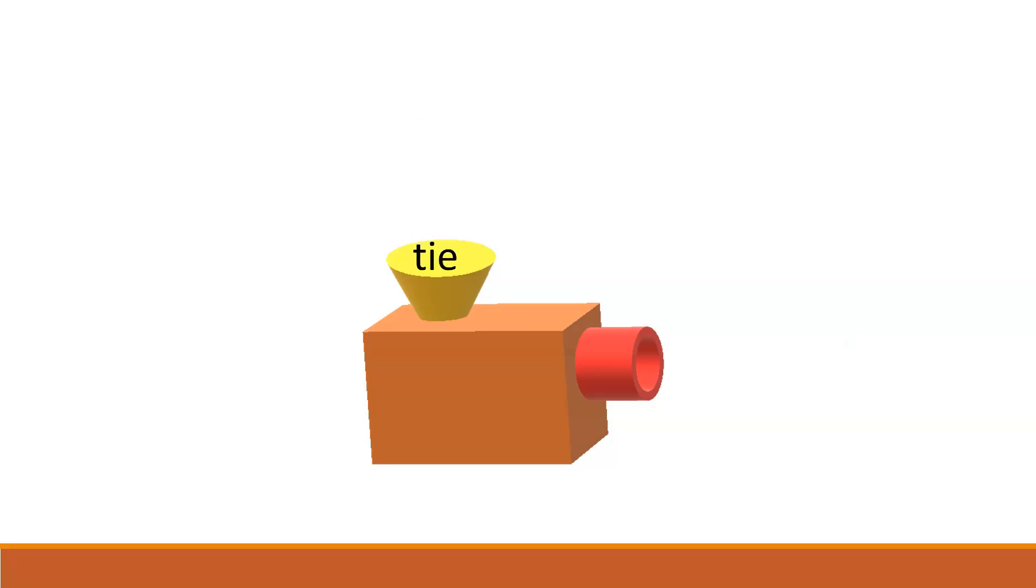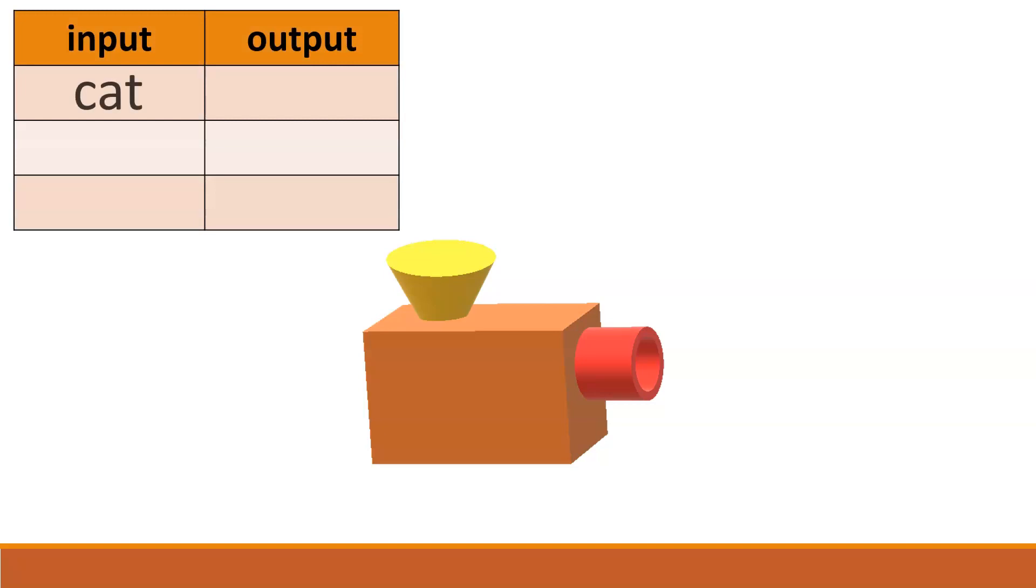Once we've done this enough so that we see what some of our input-output pairs are, we can organize them in a table. In this case, an input of cat gave us an output of c, an input of key gave us an output of k, and an input of tie gave us an output of t.